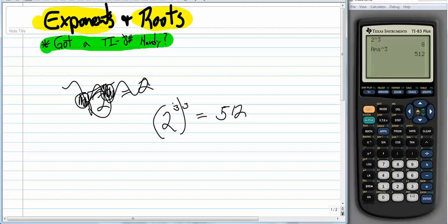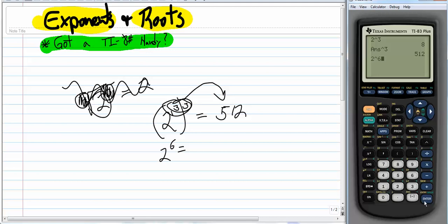So, hmm, how can I make kind of a rule here? What did, 2 to the what led to the 512? So, let's try adding these, 2 to the sixth. Let's see what that gives us. So let's go 2 to the sixth power. That gives us 64. Okay, so that doesn't do it.